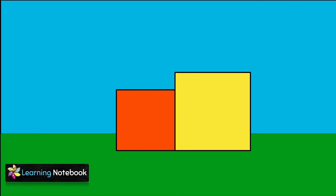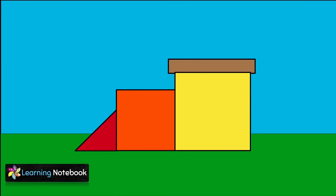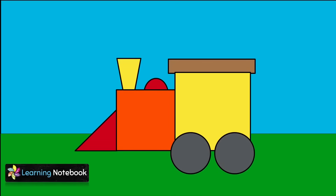Paste a brown rectangle and a red triangle as shown. Now let's cut a small semicircle and a small trapezium to make different parts of this engine. Next, cut two big circles and one small circle to form the wheels of this engine.